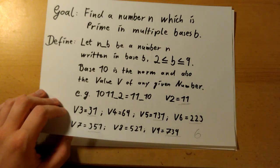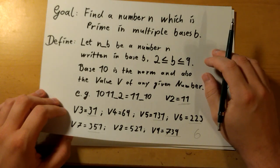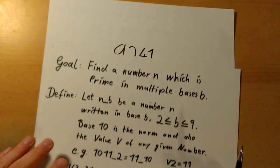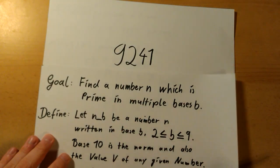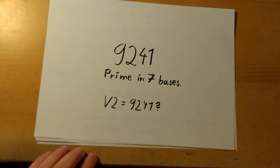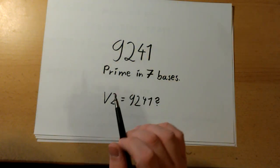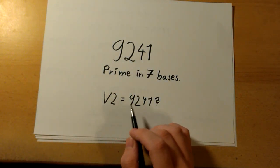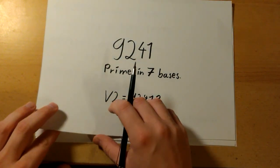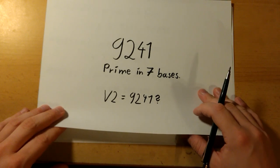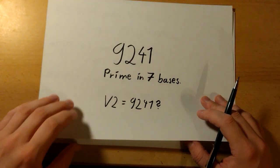Therefore I took this one, and I got a code written which found me this number 9241, which apparently is prime in seven bases. I just thought this might be the base 2 value, and it's easier for the code to spit out this short number instead of whatever long number comes out.